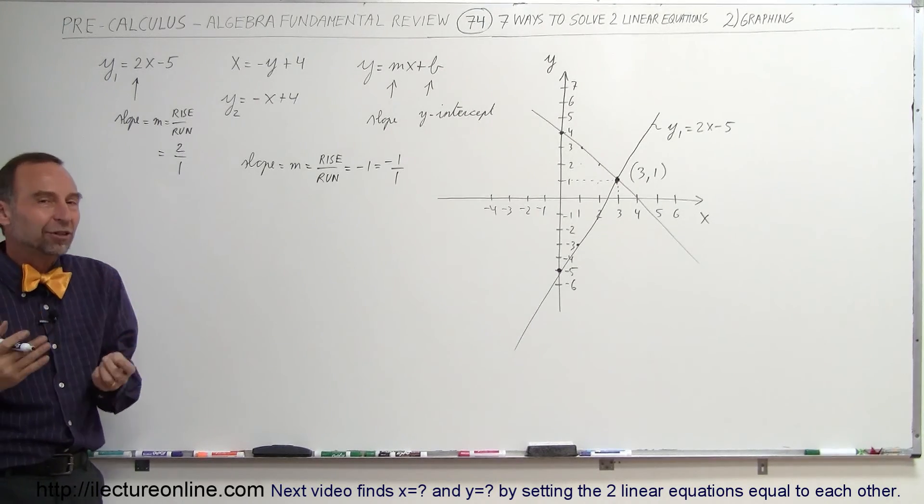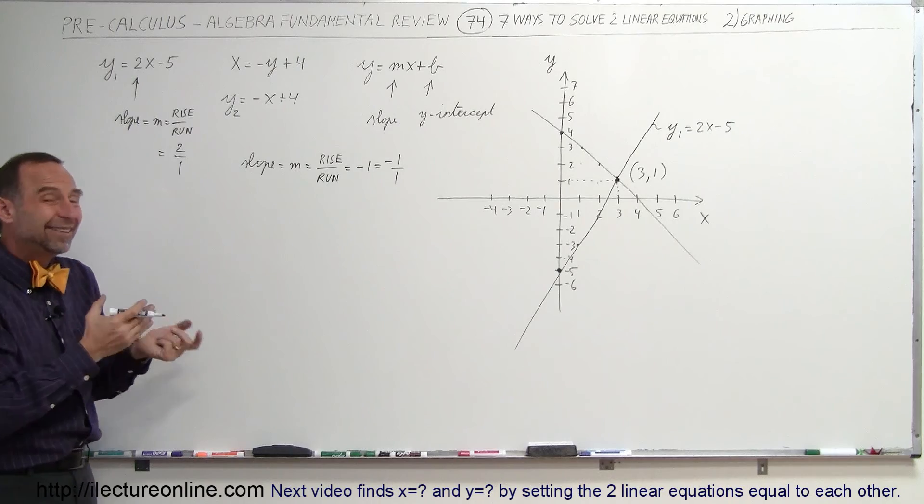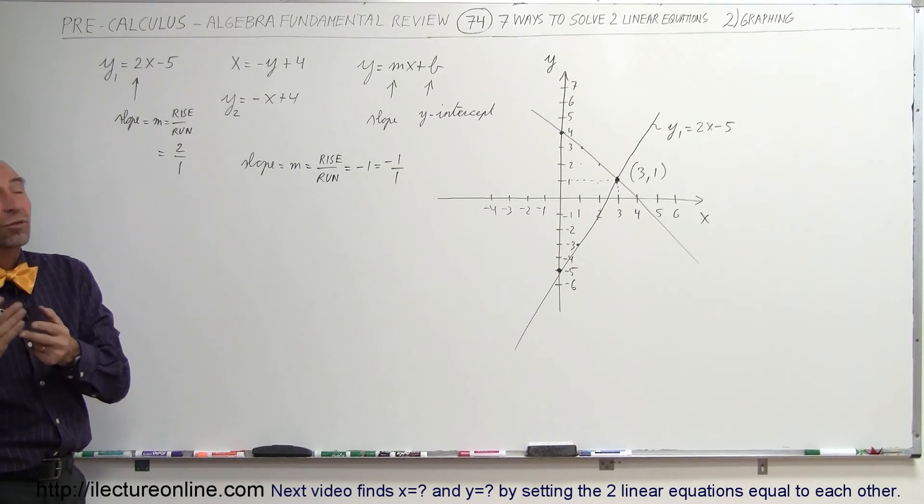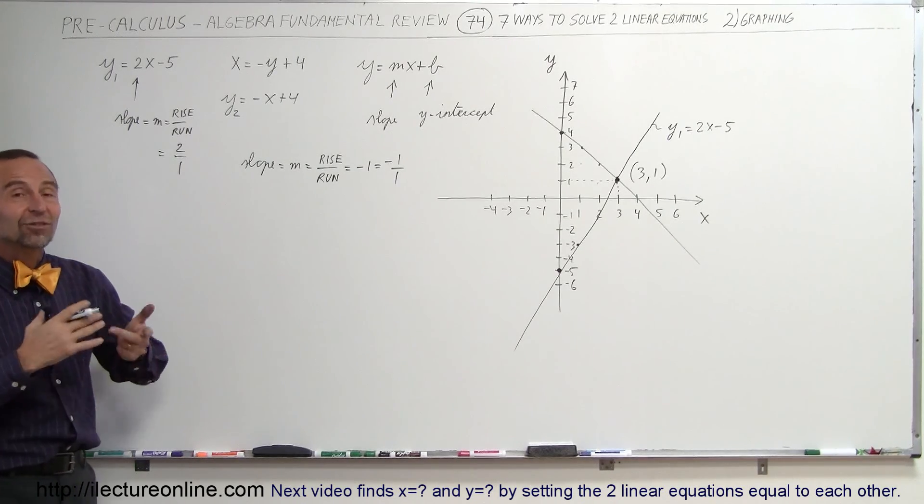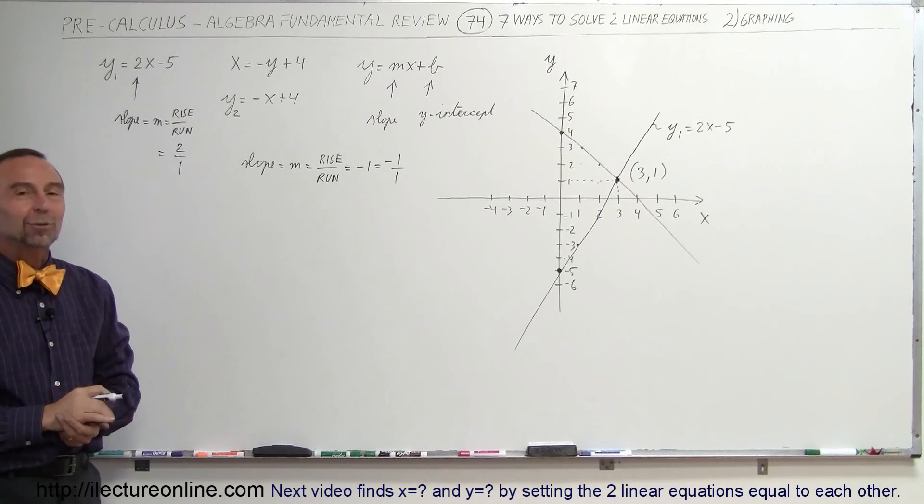And that's using the graphical method. It's quick, it's easy, it doesn't always give you the exact result. But again, it's just one of the seven methods available. And that's how we do that.